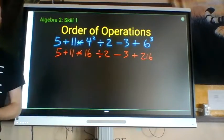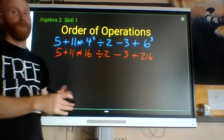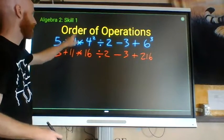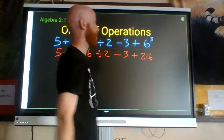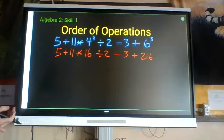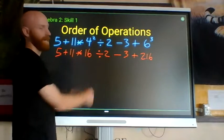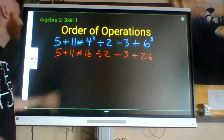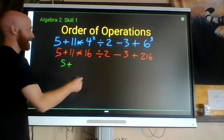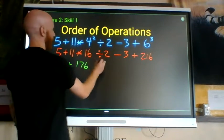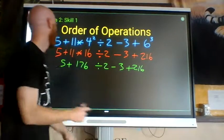Be very careful when doing a problem with many operations that you don't accidentally drop terms. The expression is: 5 plus 11 times 4-squared divided by 2 minus 3 plus 6-to-the-third. After handling exponents, the next most powerful operations are multiplication and division. Since they're right next to each other, work from left to right: 11 times 16 is 176, so we have 5 plus 176 divided by 2 minus 3 plus 216.